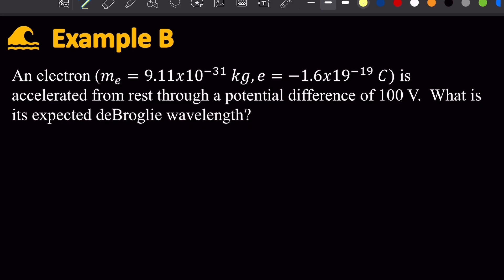The next example says that a voltage of 100 volts is applied to an electron at rest and used to accelerate the electron, and it's asking for the expected de Broglie wavelength of the electron.